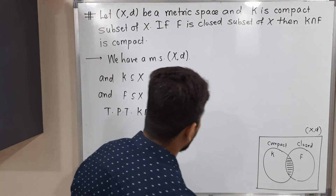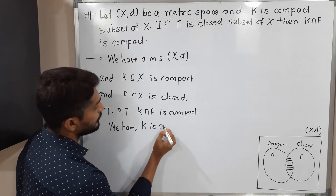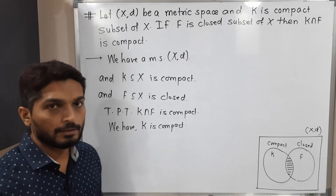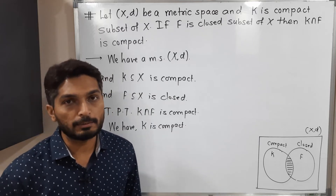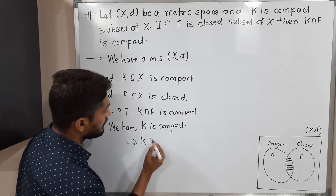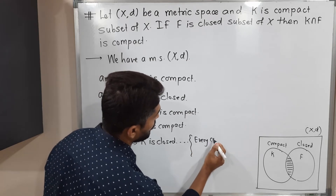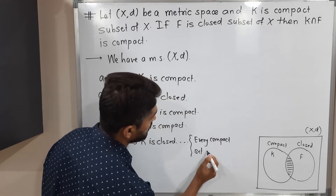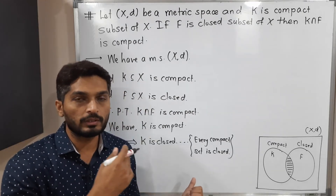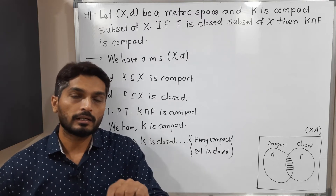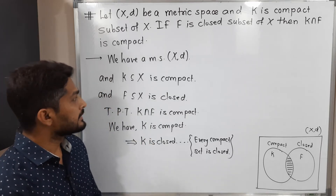Let us start with the given information that K is compact. We have already proved in a previous video that every compact set is closed. So since K is compact, we can say K is closed. I will add the link of that video in the description so you can watch it if you want.